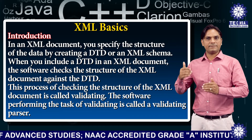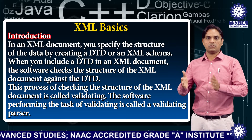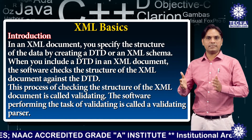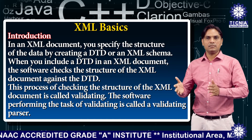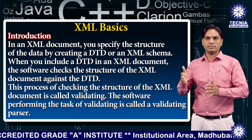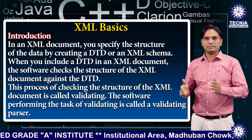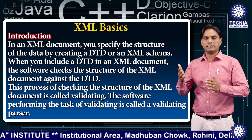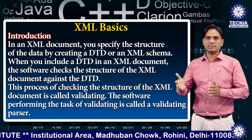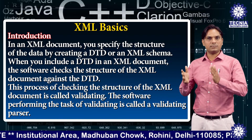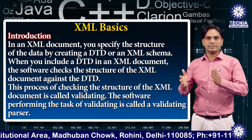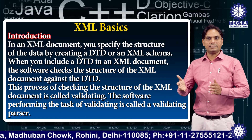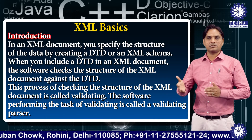In an XML document, you can specify the structure of the data by creating a DTD — Document Type Declaration — or an XML schema. When you include a DTD in an XML document, the software checks the structure of the XML document against the DTD. This process is called validating, and the software performing this task is called a validating parser.